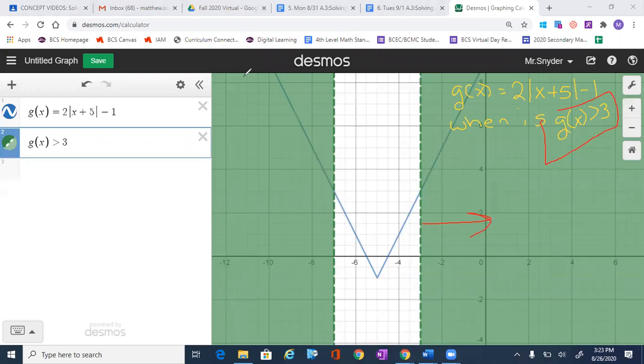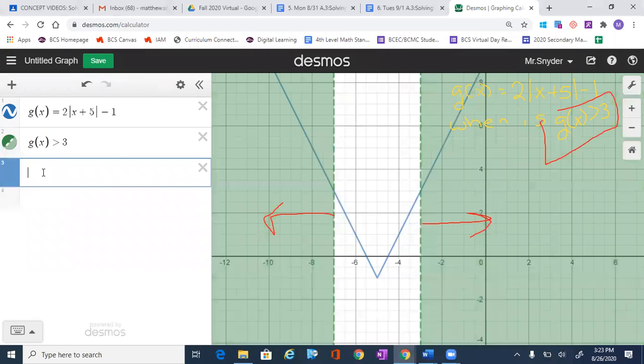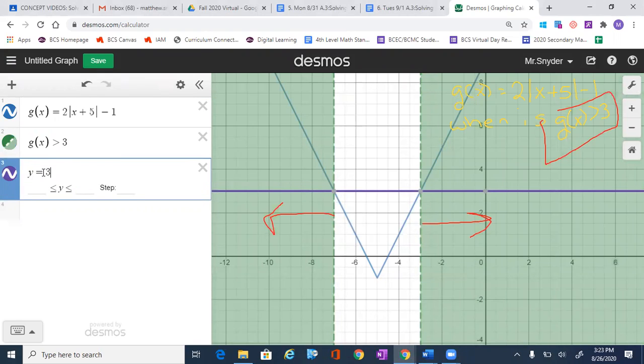The shading is going in that direction, showing us where the graph is greater than 3. Another way of looking at this is to say, well, I could also write y equals 3.